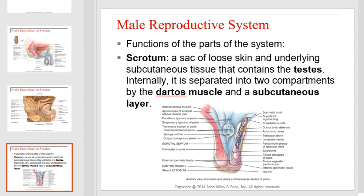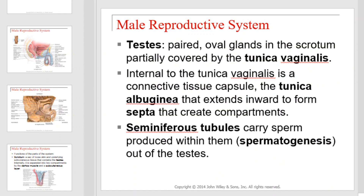The functions of the parts of the system. The scrotum is a sac of loose skin and underlying subcutaneous tissue that contains the testes. Internally, it's separated into two compartments by the dartos muscle and subcutaneous layer. The testes are paired oval glands in the scrotum, partially covered by the tunica vaginalis.